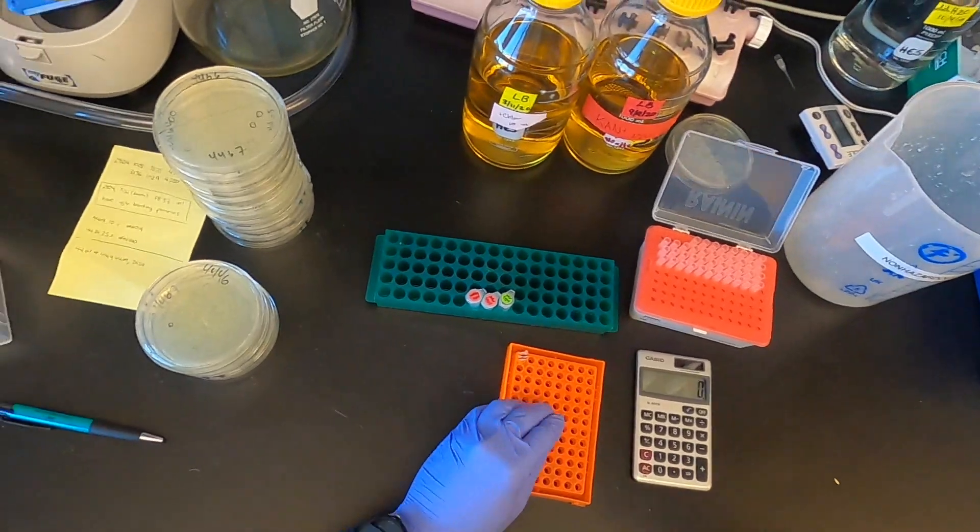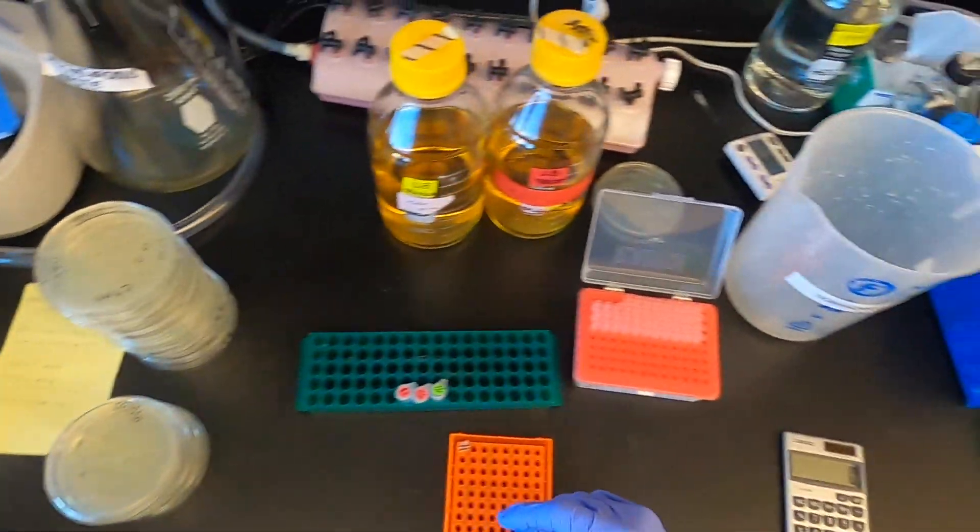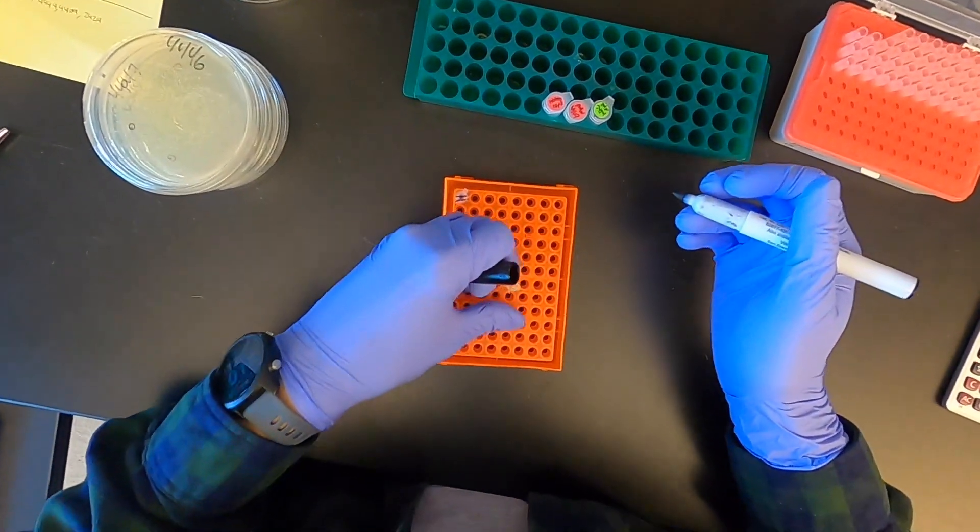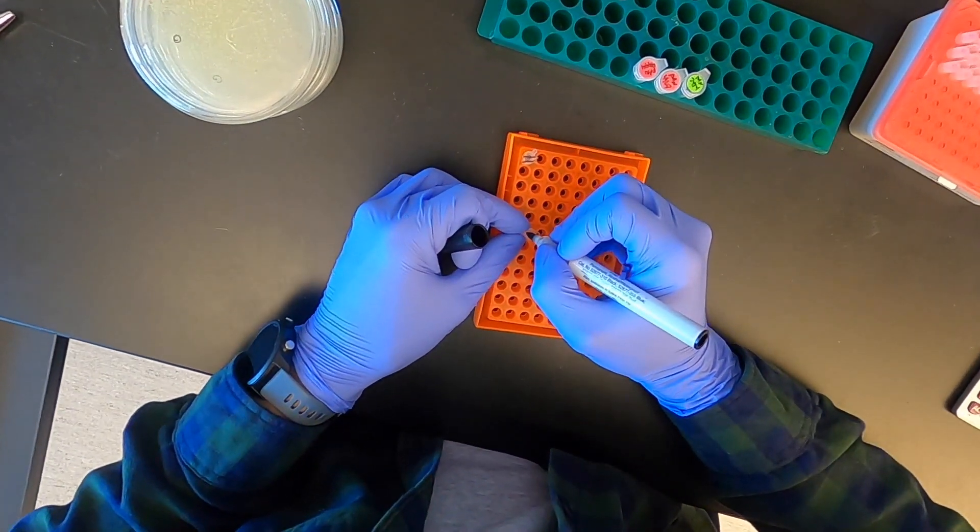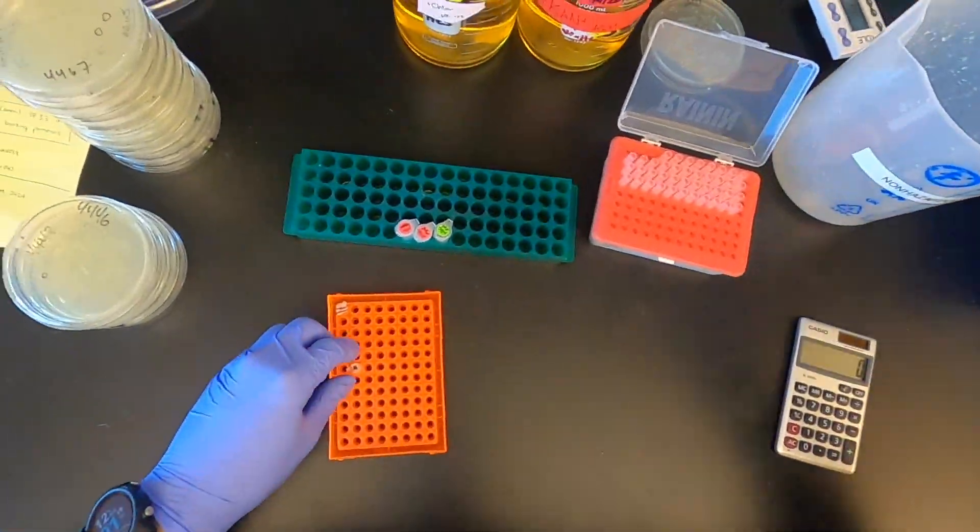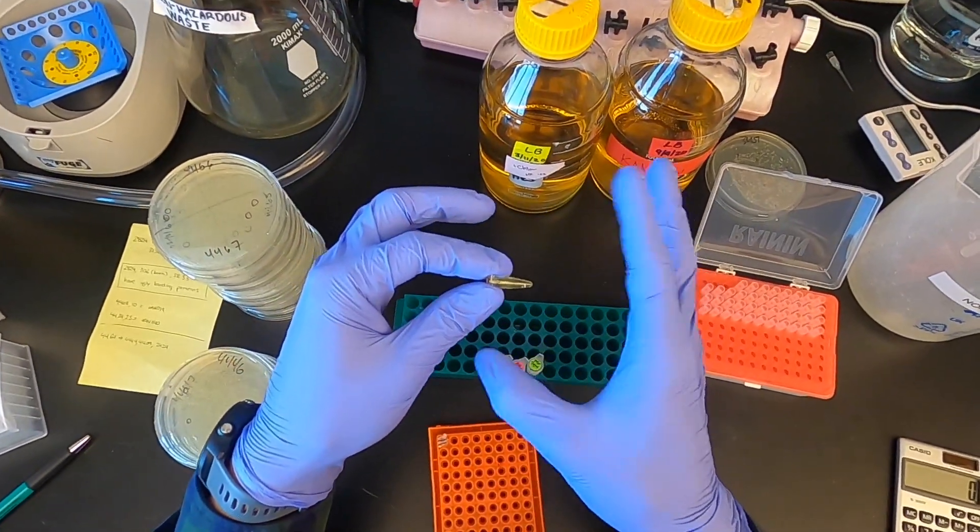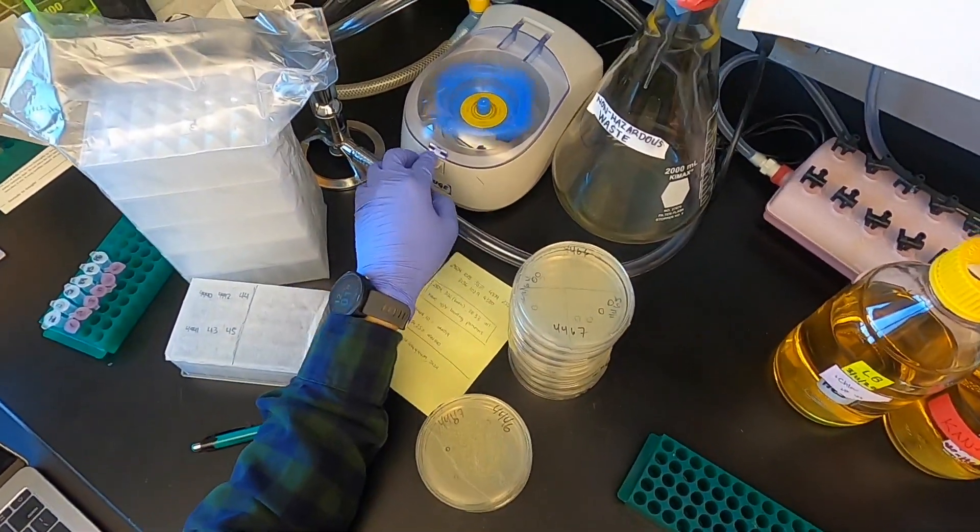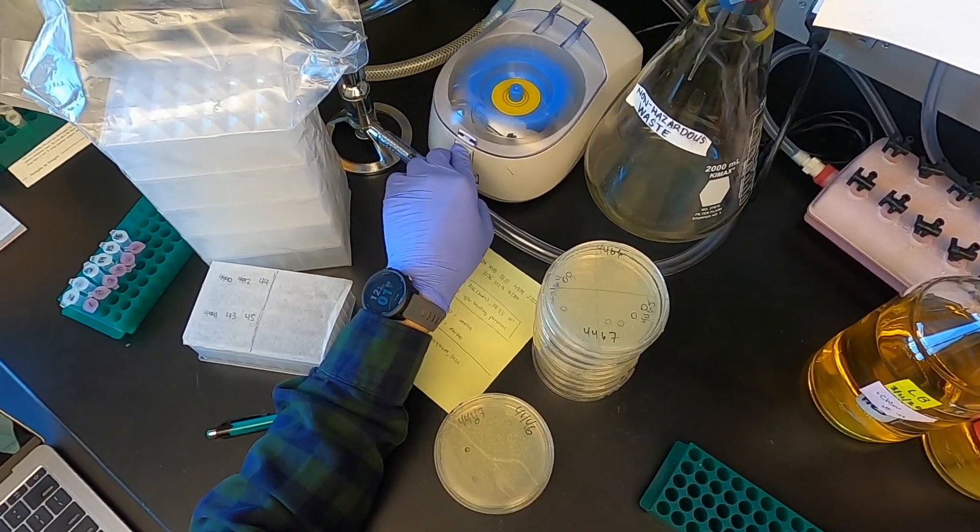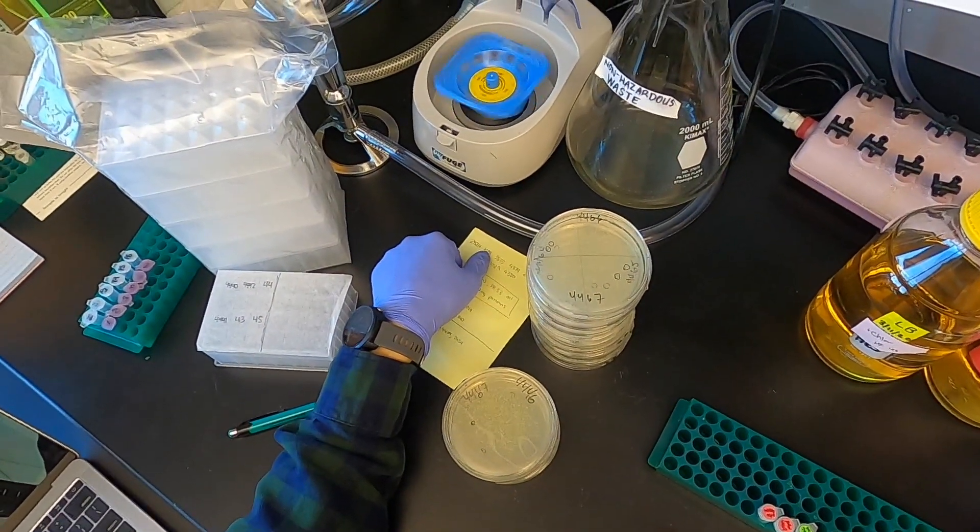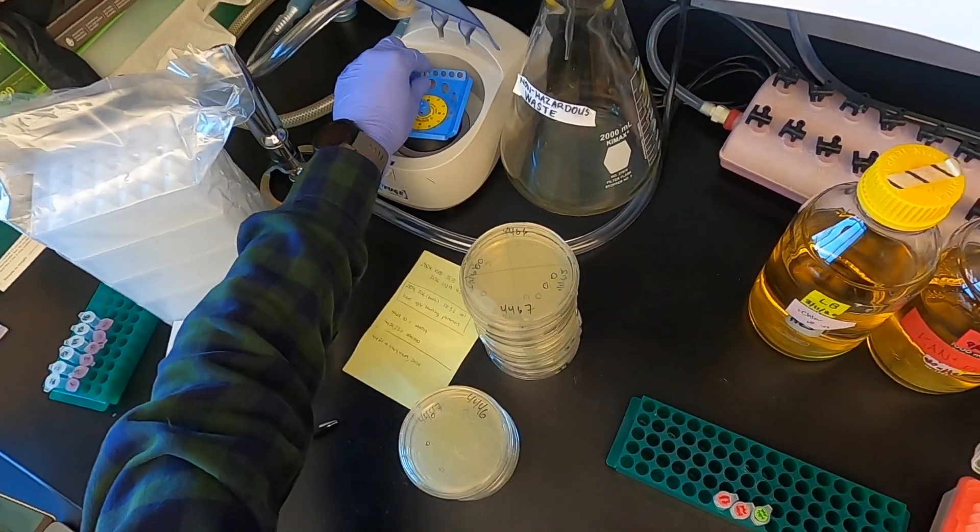Now I will label that tube with a marker. 64. And then I'm going to flick the tube to mix the contents and then spin that down in the centrifuge. Perfect.